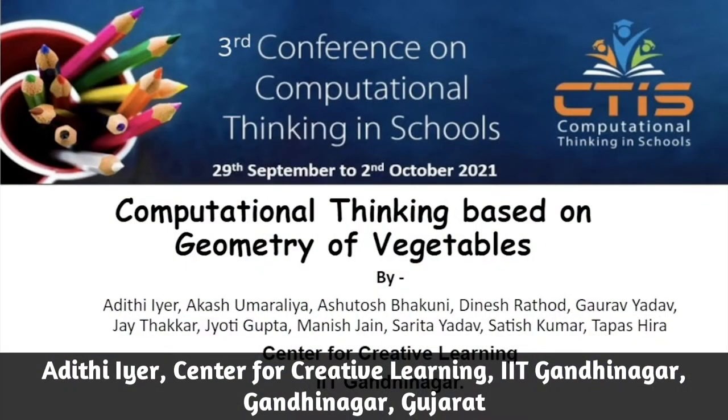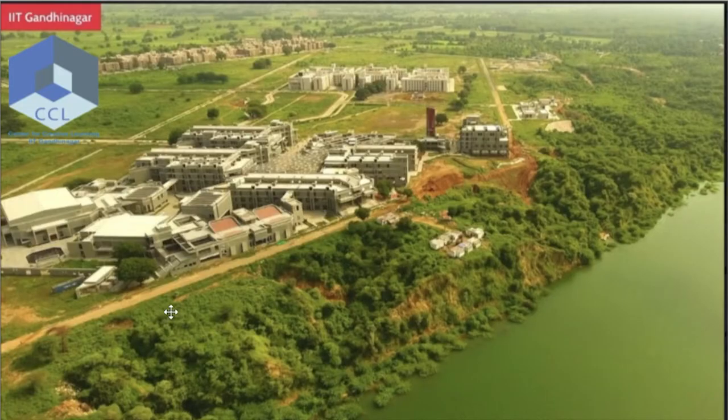Hello, I am Aditi from Center for Creative Learning IIT Gandhinagar and we will be discussing this paper on computational thinking based on geometry of vegetables. So about a year ago with the help of CBSE and Vigyan Prasad we at Center for Creative Learning IIT Gandhinagar conducted an online program called the 3030 STEM. So this program aimed at discovering the beauty of mathematics and science and nurturing the inherent curiosity by engaging in hands-on activities. So generally in classes we try to start from a subject and then move to an object. In 3030 STEM we tried the other way around, started with an object and then move to a subject.